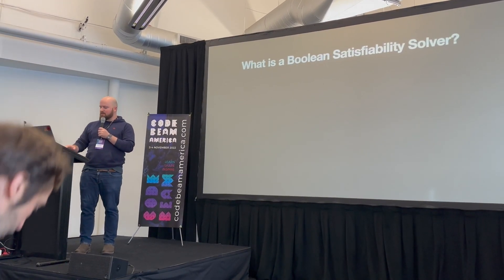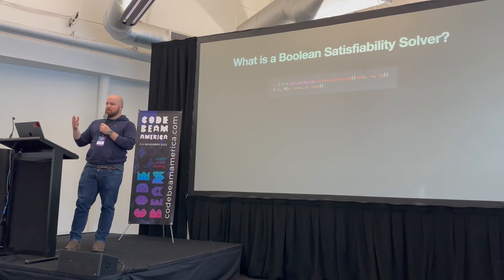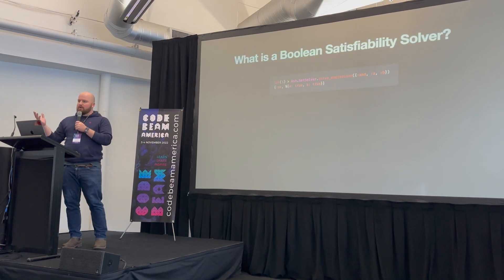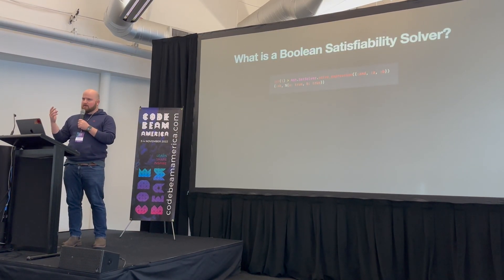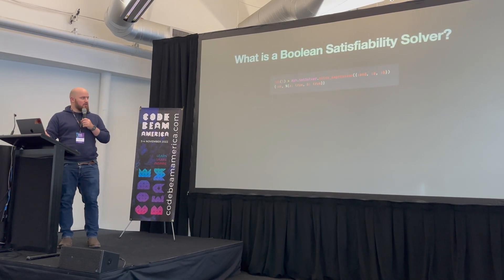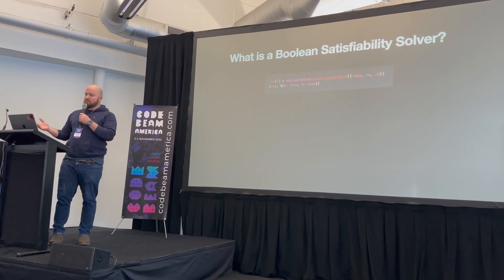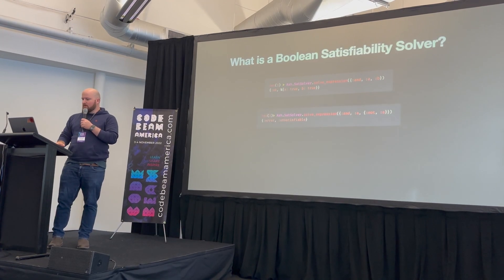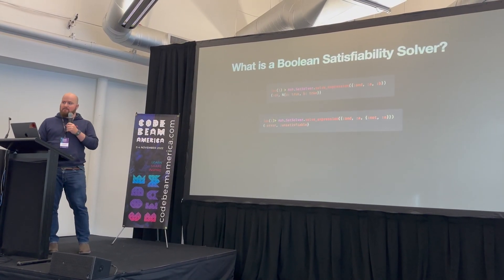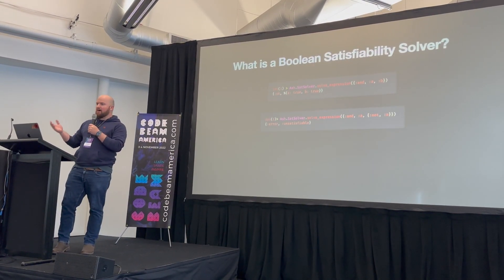What is a Boolean Satisfiability Solver? A Boolean Satisfiability Solver will take a Boolean expression like A and B, and it will give you a scenario by which that expression may be true. So in this case, we're saying solve the expression A and B, and it says okay, that expression is true if A is true and B is true. And as another example, we say A and not A, and that comes back and says that's unsatisfiable — there is no situation where A and not A is true.